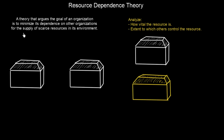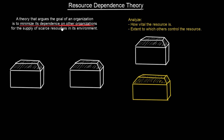We are getting to one of the most popular theories in organizational theory studies, called Resource Dependence Theory. Here you see the definition, and it's quite tricky to understand, so I will try to draw the whole definition and a nice example. This theory argues that the goal of an organization is to minimize its dependence on other organizations for the supply of scarce resources.